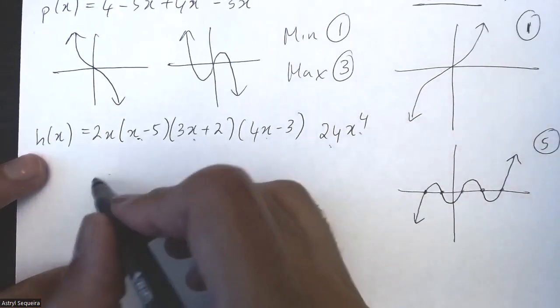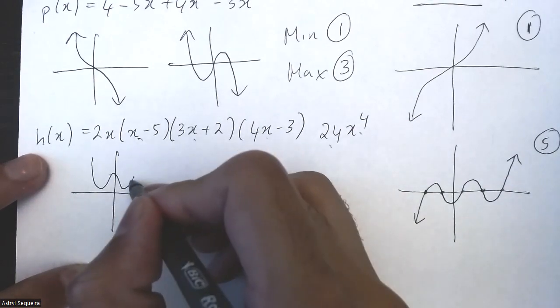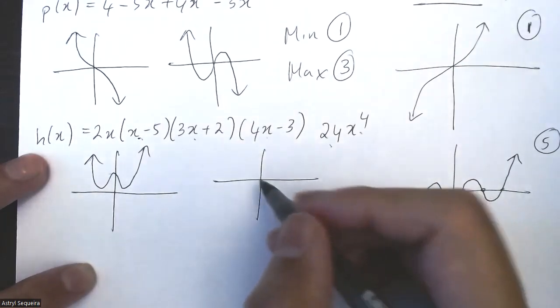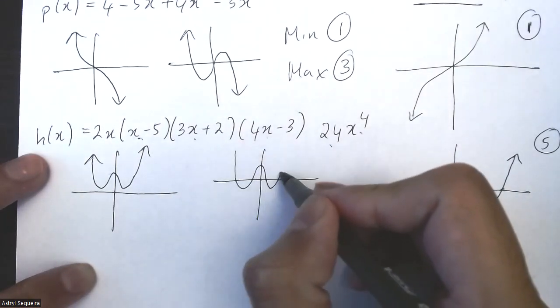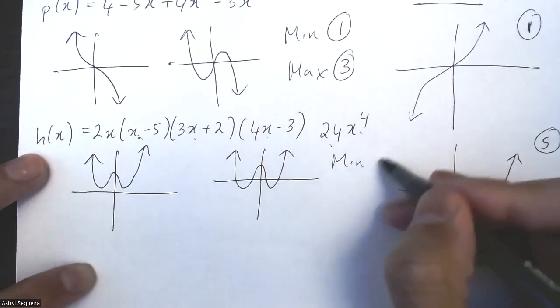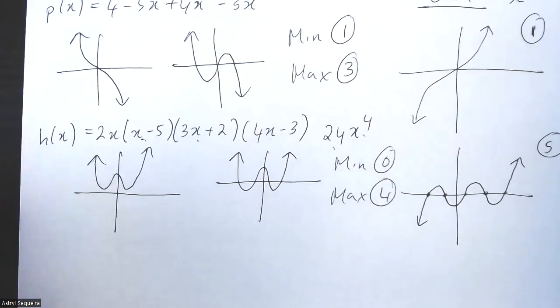This is a positive even function. So I know that the minimum number of zeros is zero, and then the maximum is going to be four.